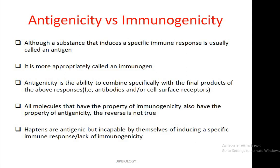Here you can see some aspects of antigenicity versus immunogenicity. Sometimes we can confuse these two terms. Although a substance that induces a specific immune response is usually called an antigen, it is more appropriately called an immunogen. Antigenicity is the ability to combine specifically with the final products of the immune response — that is, antibodies and/or cell surface receptors.